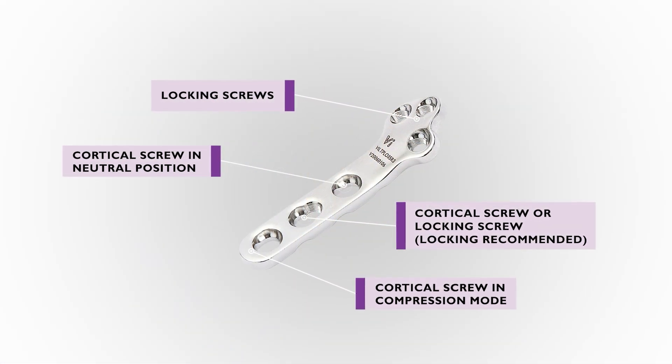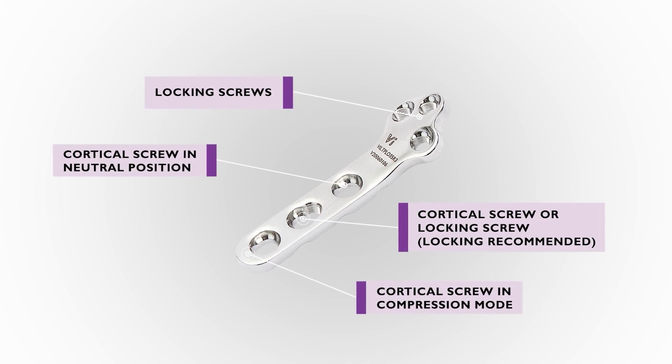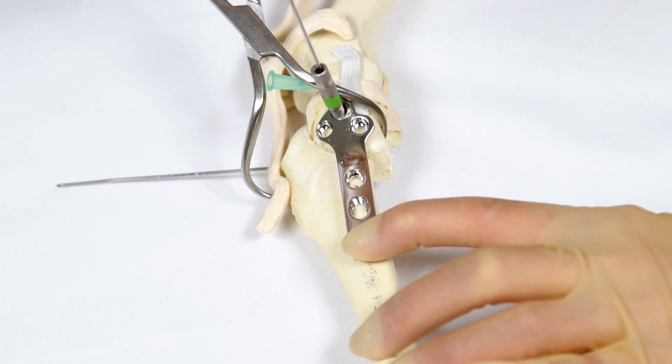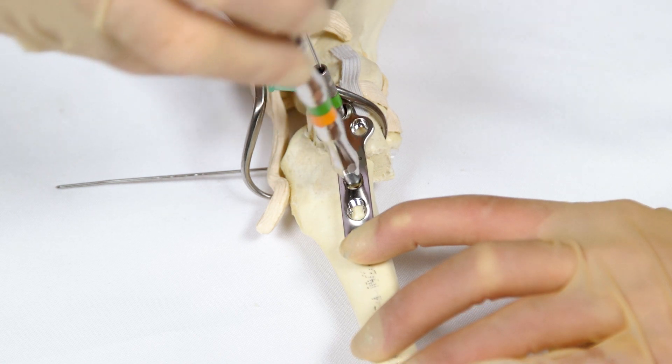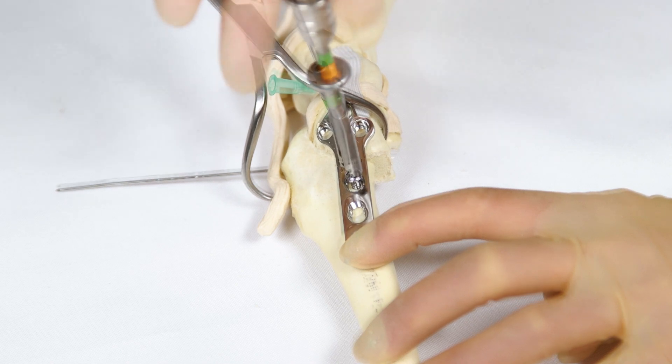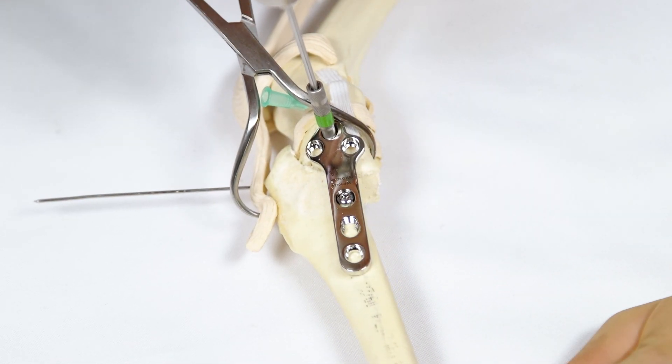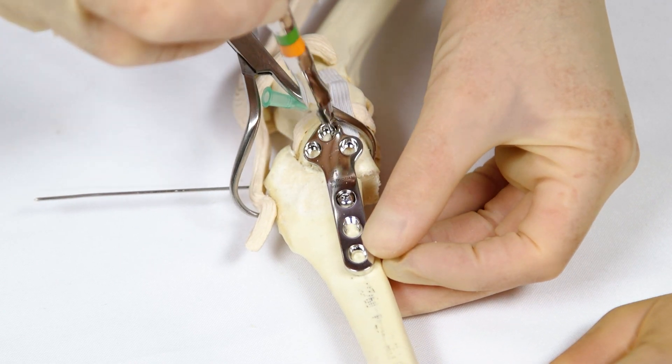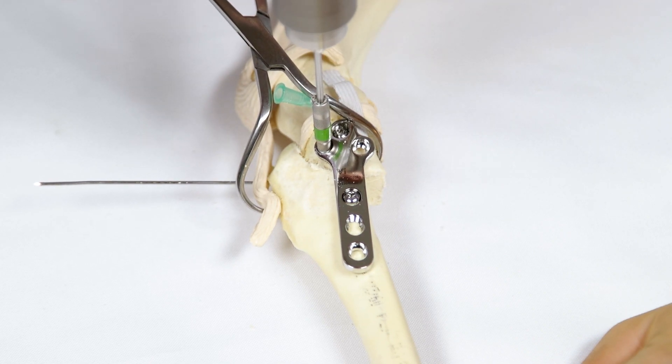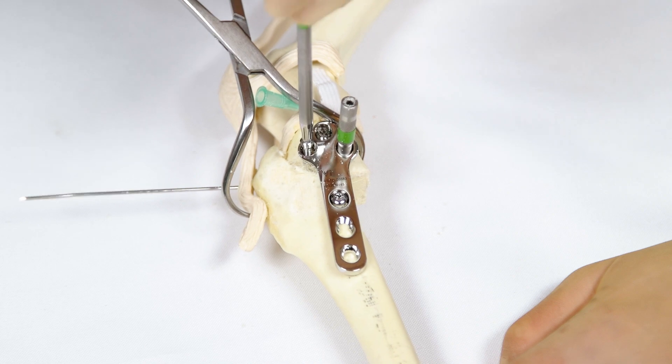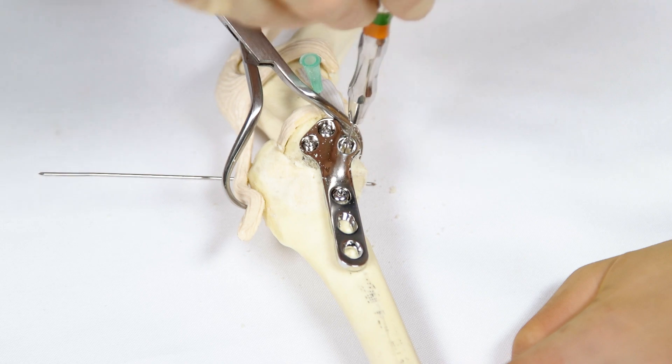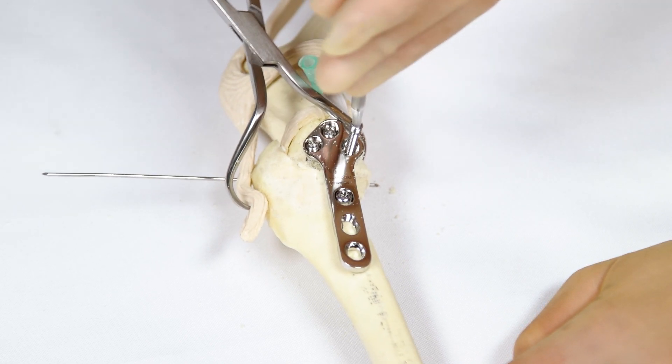The order of screw placement in this type of locking TPLO plate is very important. The first screw is placed in the proximal hole of the straight section of the plate over the tibial diaphysis. This is a non-locking screw and is placed in the neutral position. The head of the plate is then secured to the tibial plateau using locking screws. A locking screw drill guide must be used to ensure that the pilot holes are drilled at the correct angle relative to the plate. This is important to ensure correct and secure engagement of the plate screw locking mechanism.